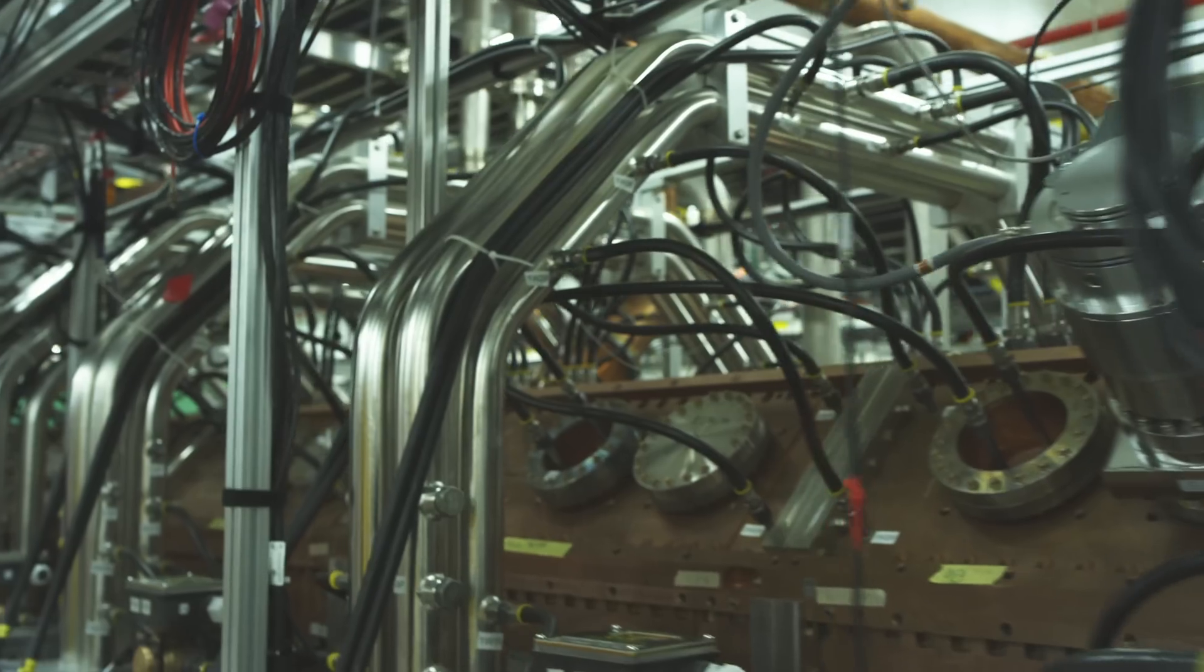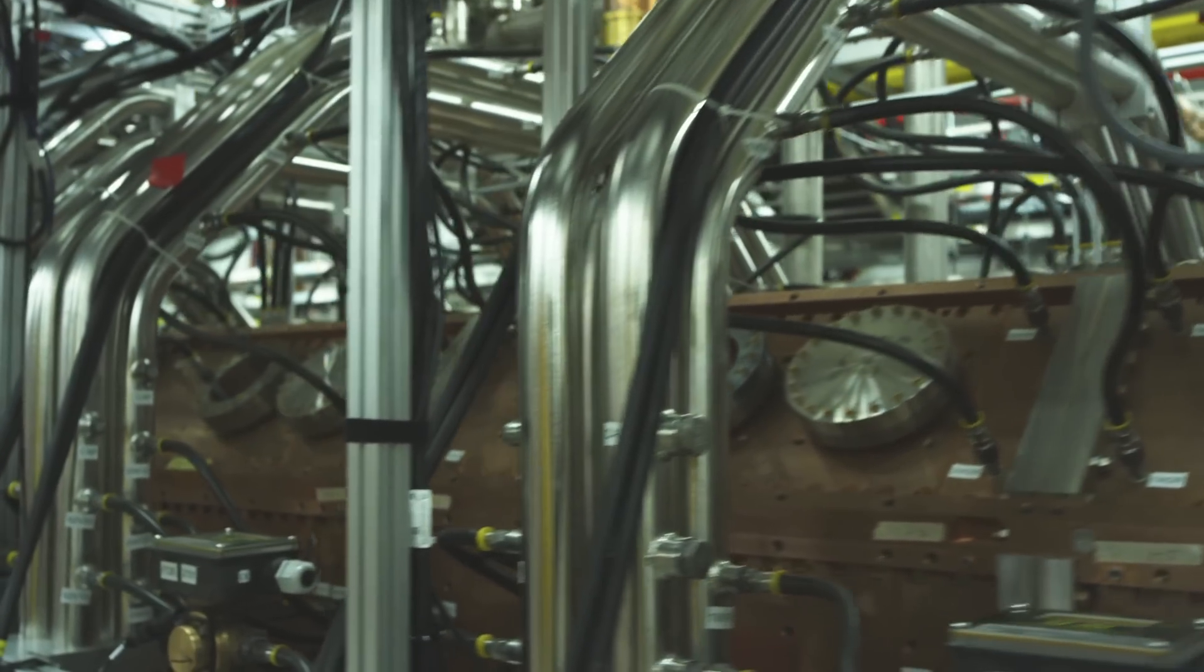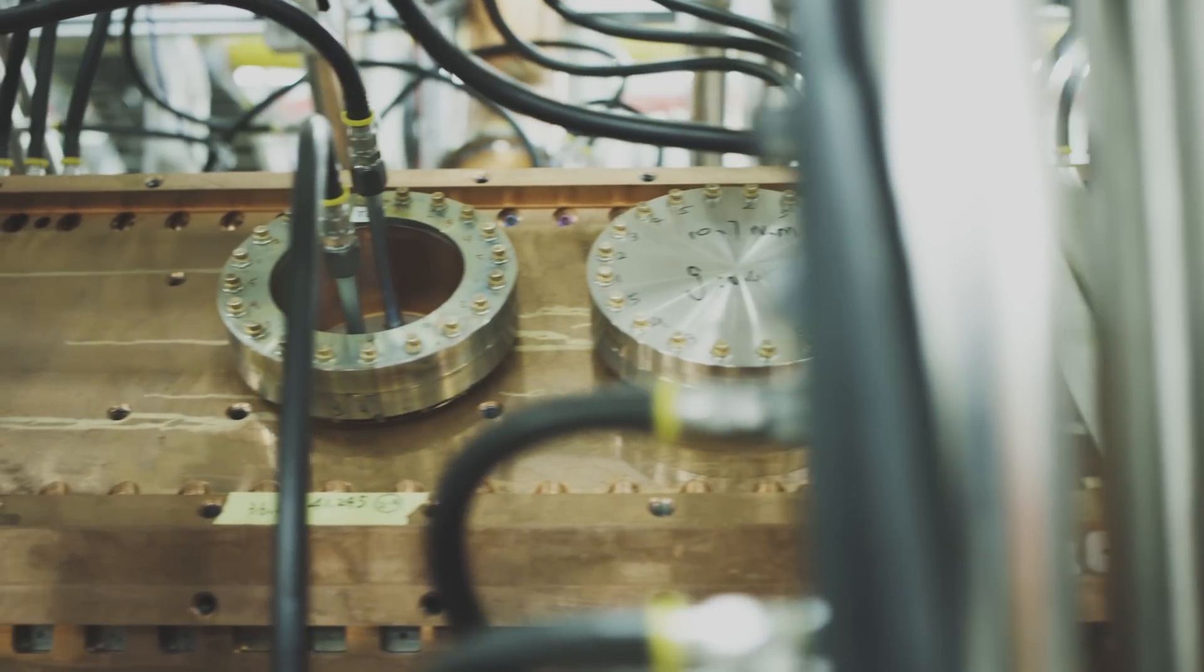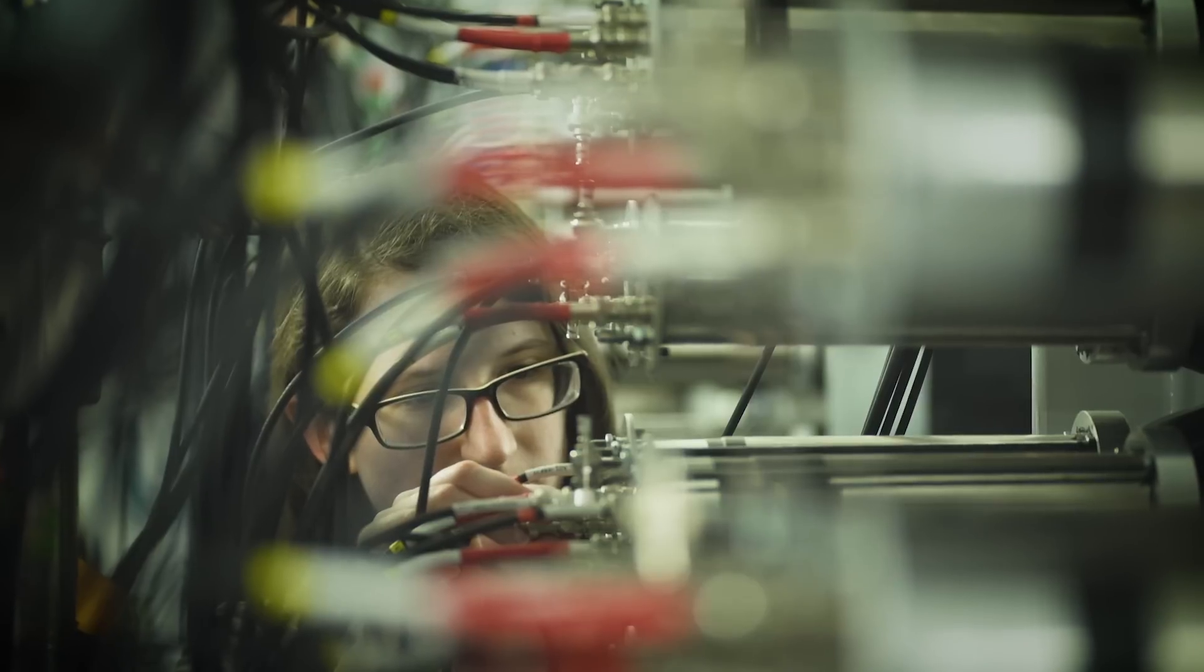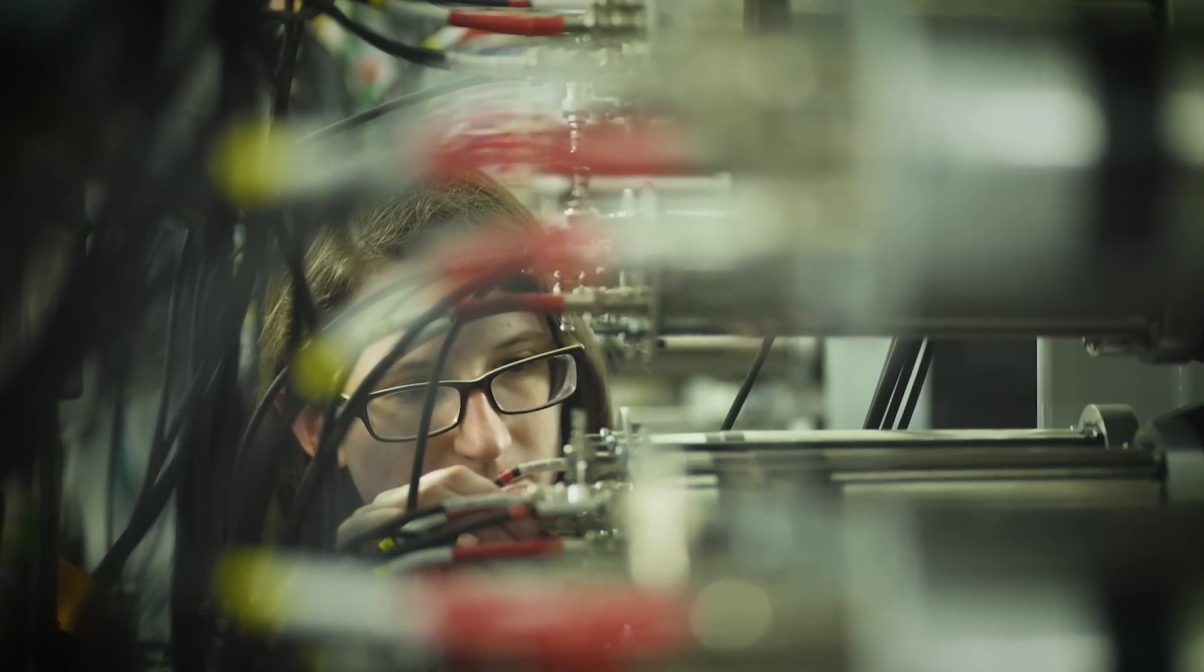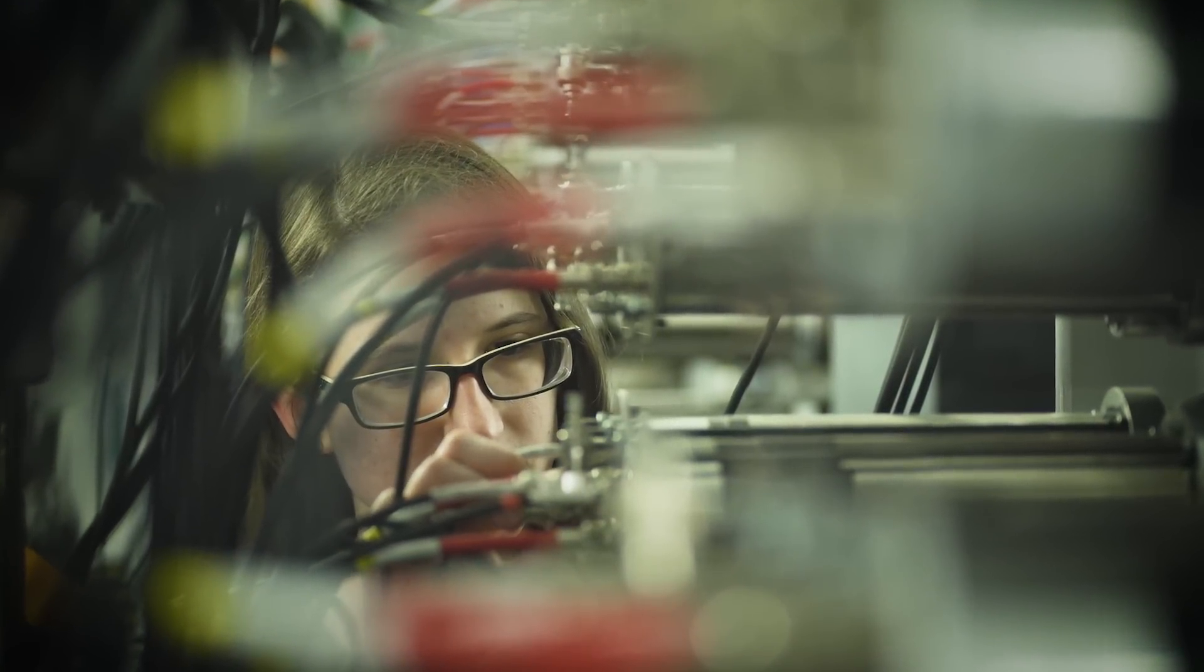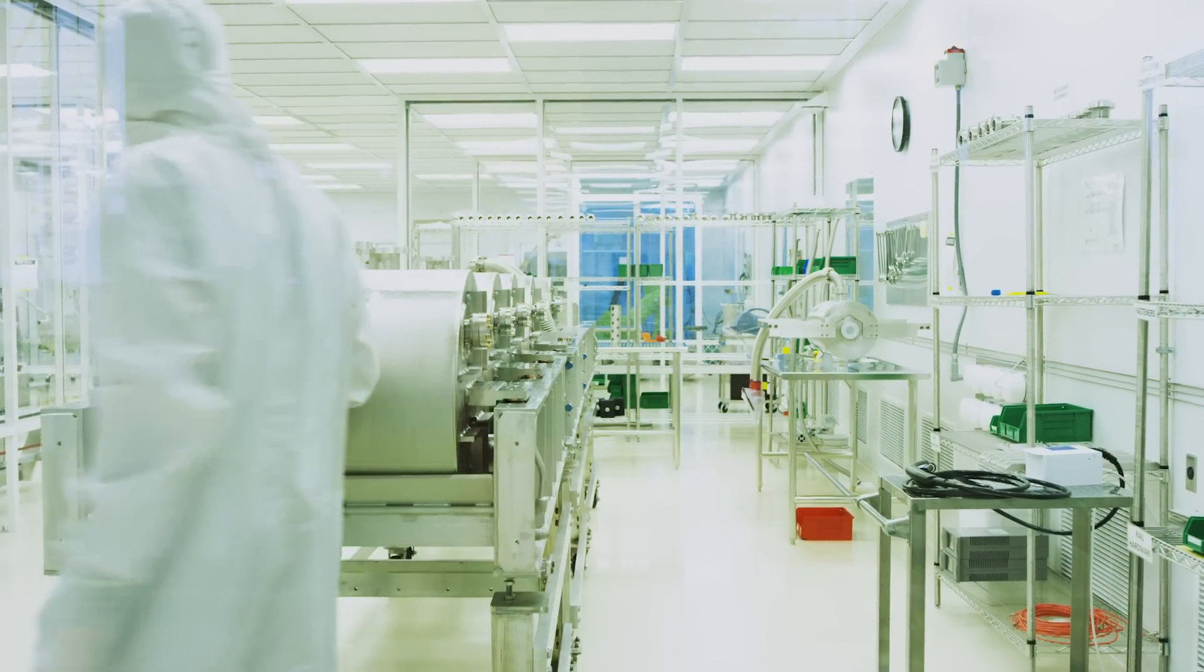This one-of-a-kind facility is part of Michigan State University, selected by the U.S. Department of Energy Office of Science to build and lead. With an investment of more than $700 million from the DOE, MSU, and the state of Michigan, FRIB will be the nation's premier center for rare isotope research.